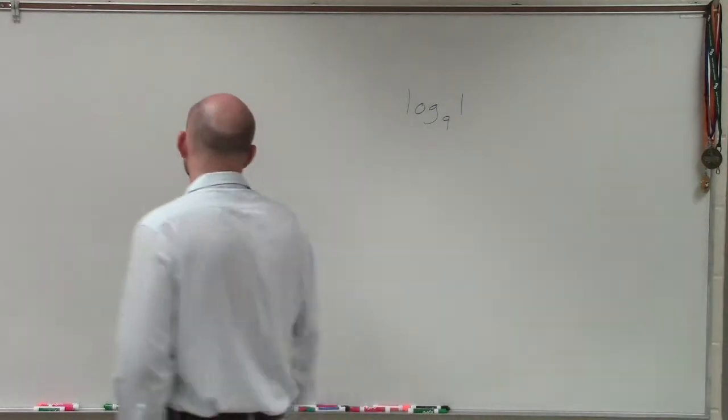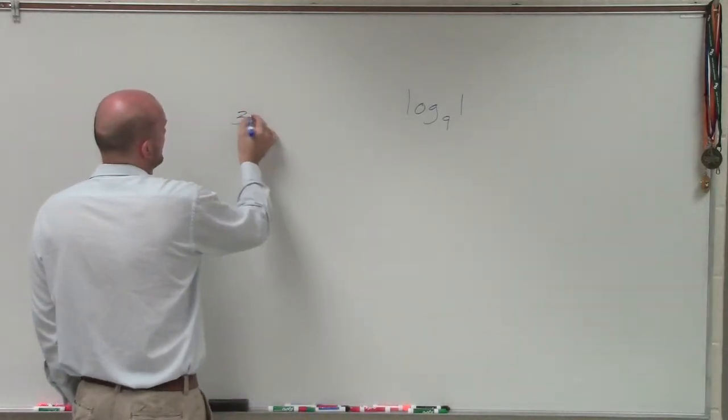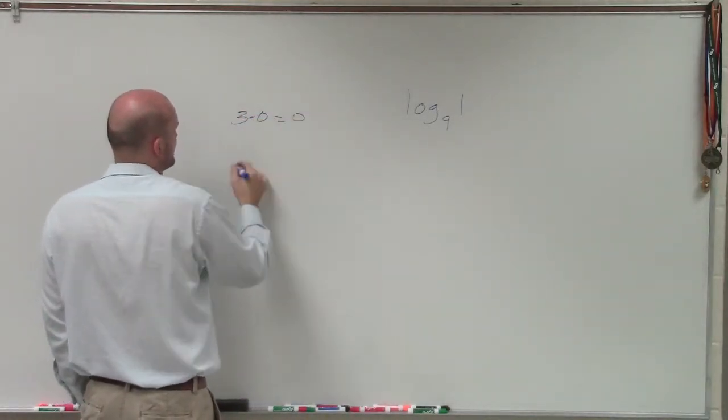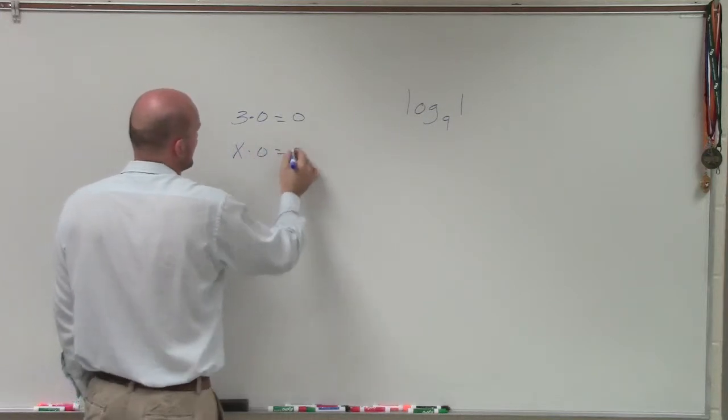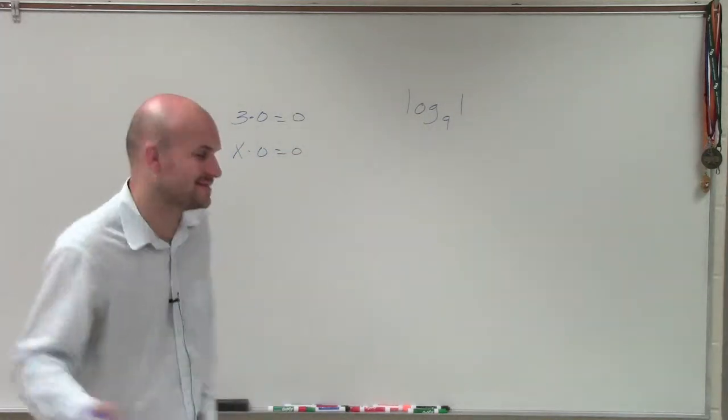OK, so this gets back to some of the points when we always say 3 times 0 we know is going to equal 0. x times 0 equals 0. Anything times 0 is always going to equal 0.